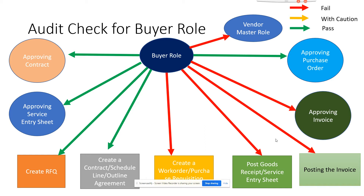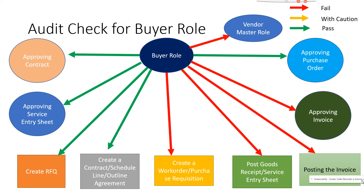A buyer can create a PO but cannot enter a goods receipt for it — that is a no. A person who has ME21N or ME22N authorization should not have MIGO or MB01 access. So a person creating a purchase order should not be able to create a goods acquisition either.